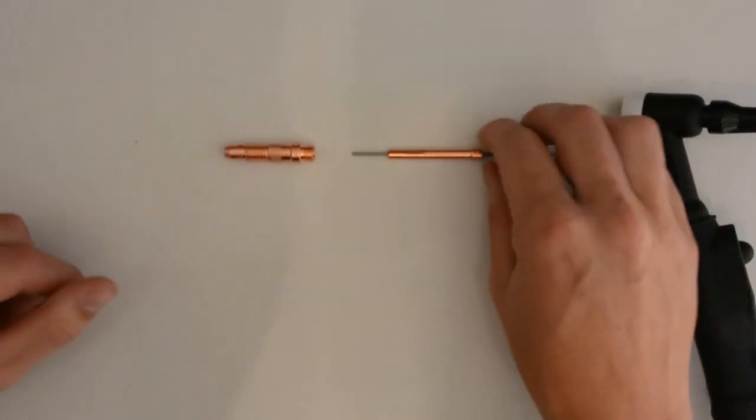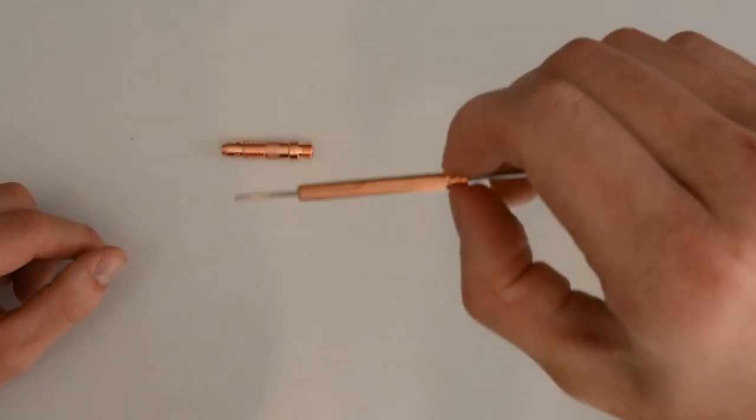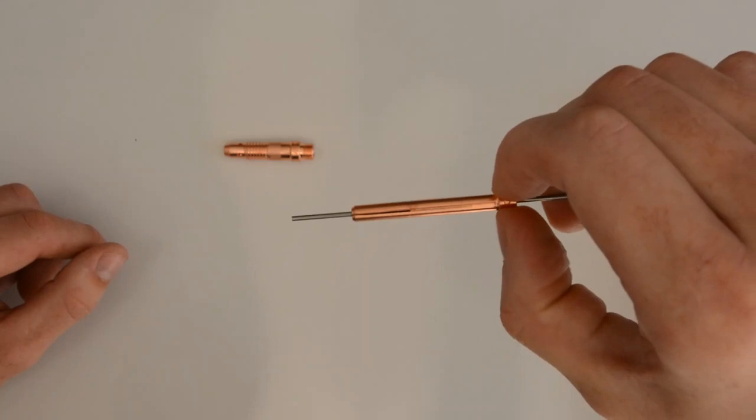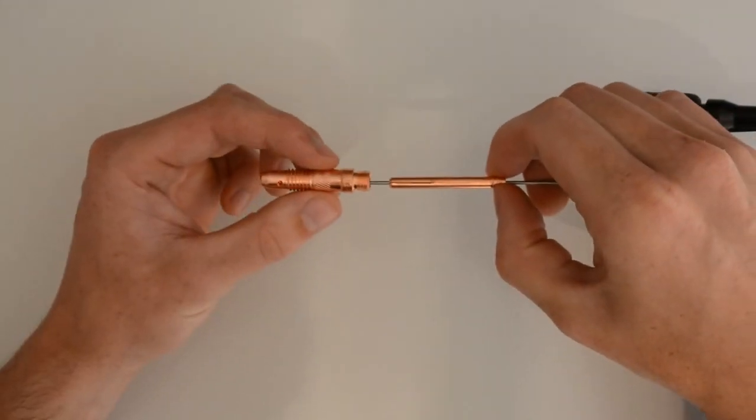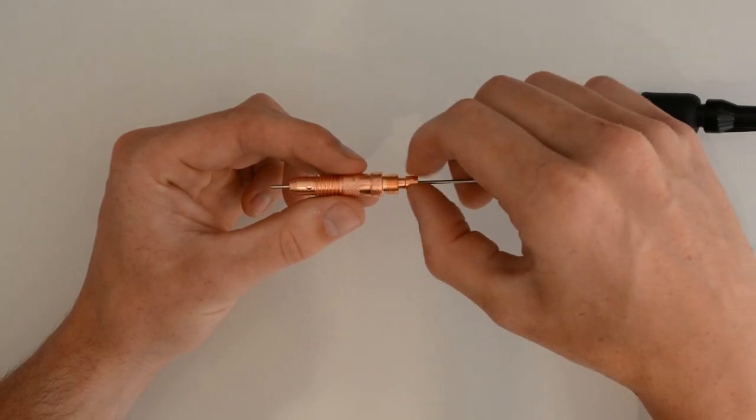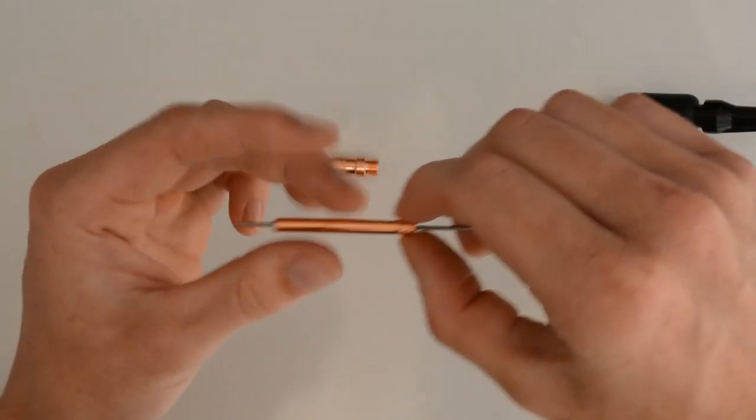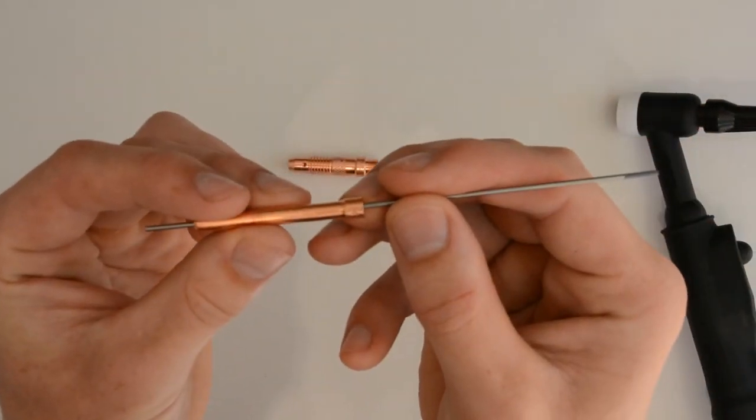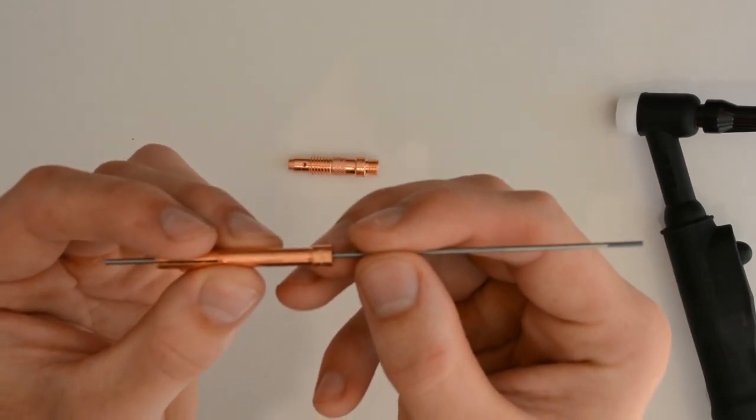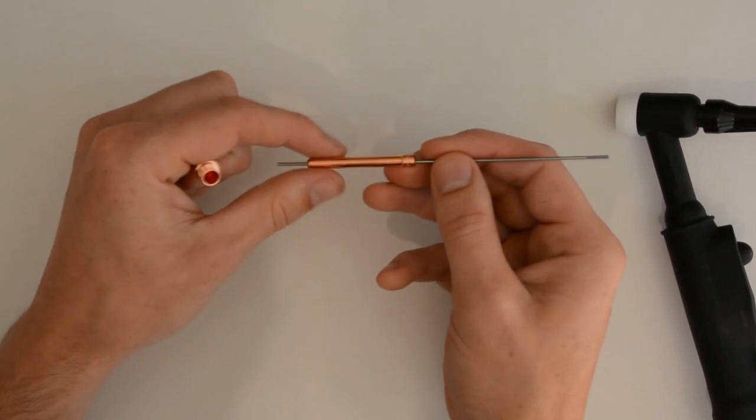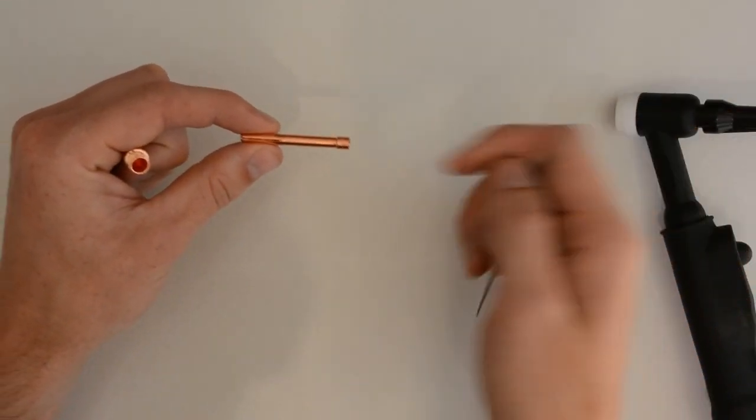So as you can see this is how it comes apart. You can see the slits in the collet are what goes into the back of the collet body. And again these collets are specific to the tungsten. They're marked 1.6mm. And tungsten just slips right out of the collet there.